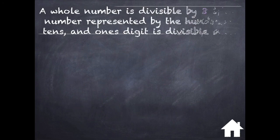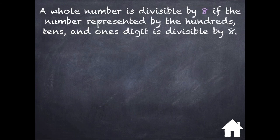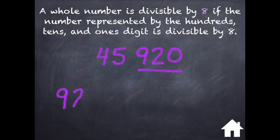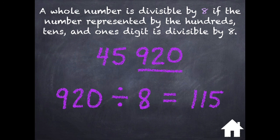A whole number is divisible by 8 if the number represented by the 100's, 10's, and 1's digits is divisible by 8. Let's look at the number 45920. If I look at the last 3 digits, it is 920. 920 divided by 8 equals 115, which tells me that 45920 is divisible by 8.